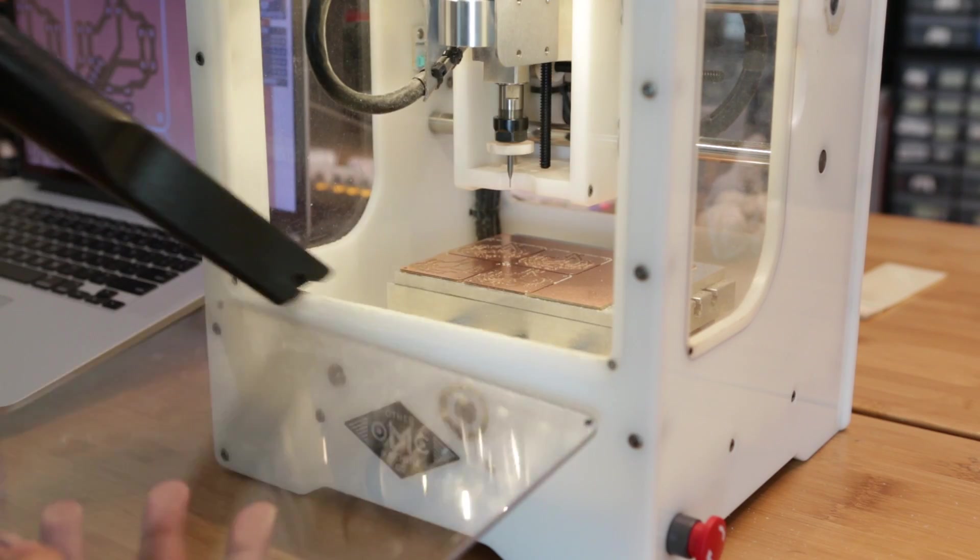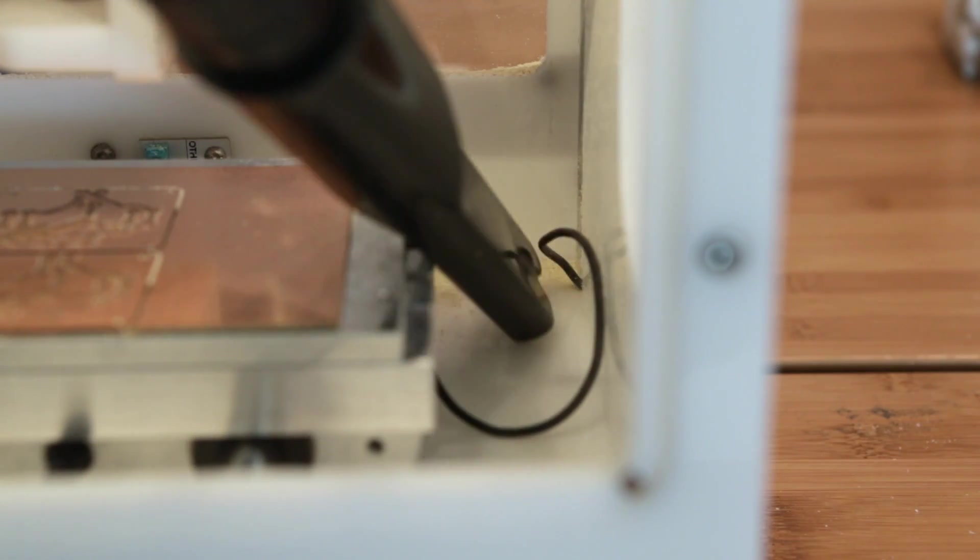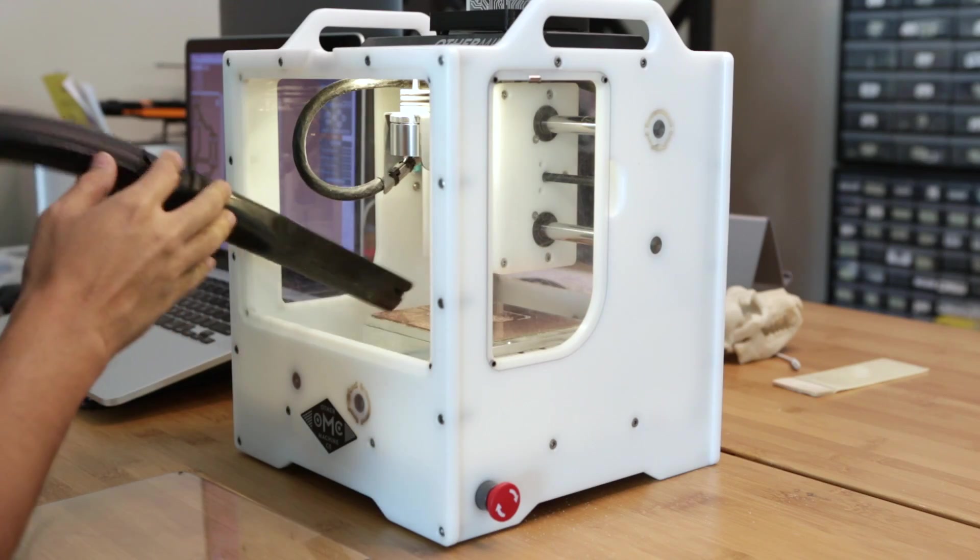I like the Othermill because it's enclosed but I don't have a dust collection system yet so I do have to do a thorough cleanup which is easy enough to do with the right vacuum attachment.